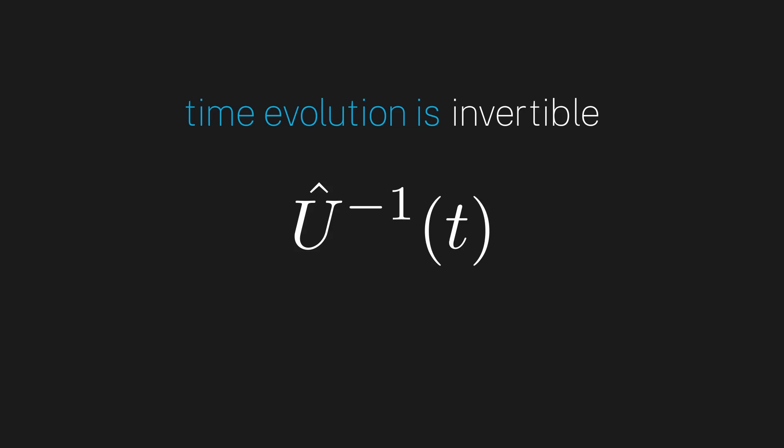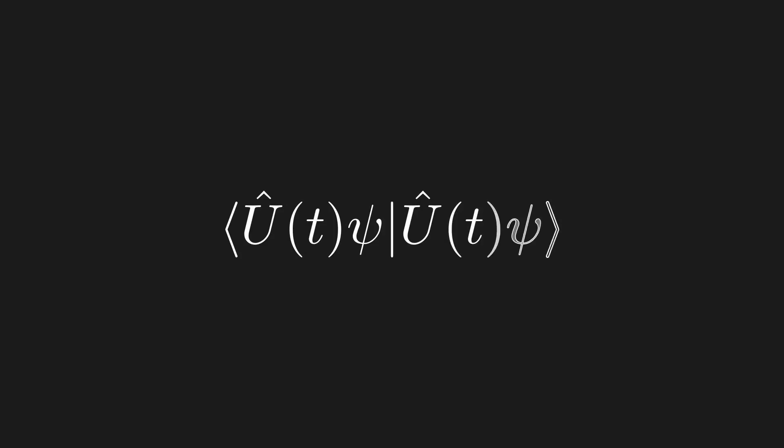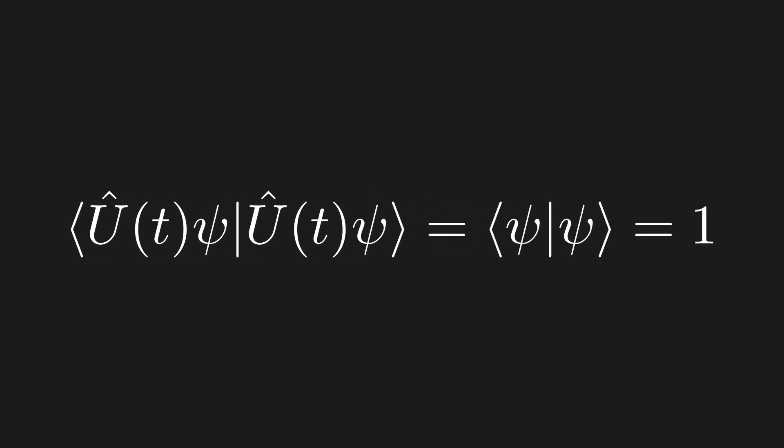For our last piece of physical intuition, it should be reasonable to expect that when we evolve our quantum state in time, the total probability should be conserved. In other words, even after we evolve the state by time t, we expect that the total probability — calculated as the inner product with itself — always stays equal to its initial value of one. Notice that this is the same property satisfied by unitary operators, and if you need a reminder of what those are, review chapter 11.